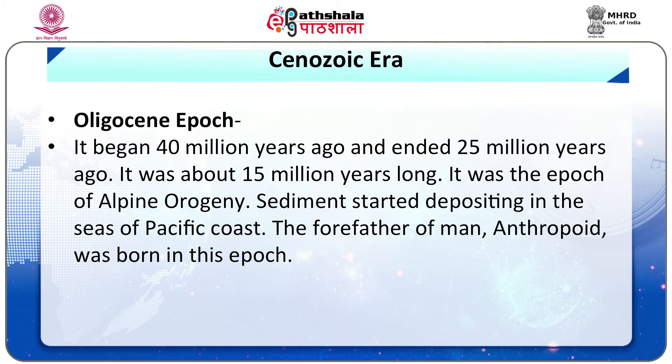The Oligocene epoch began 40 million years ago and ended 25 million years ago; it was about 15 million years long. It was the epoch of Alpine Oligocene movement. Sediments started depositing in the seas of the Pacific coast. The forefather of man, the Anthropoid, was born in this epoch.